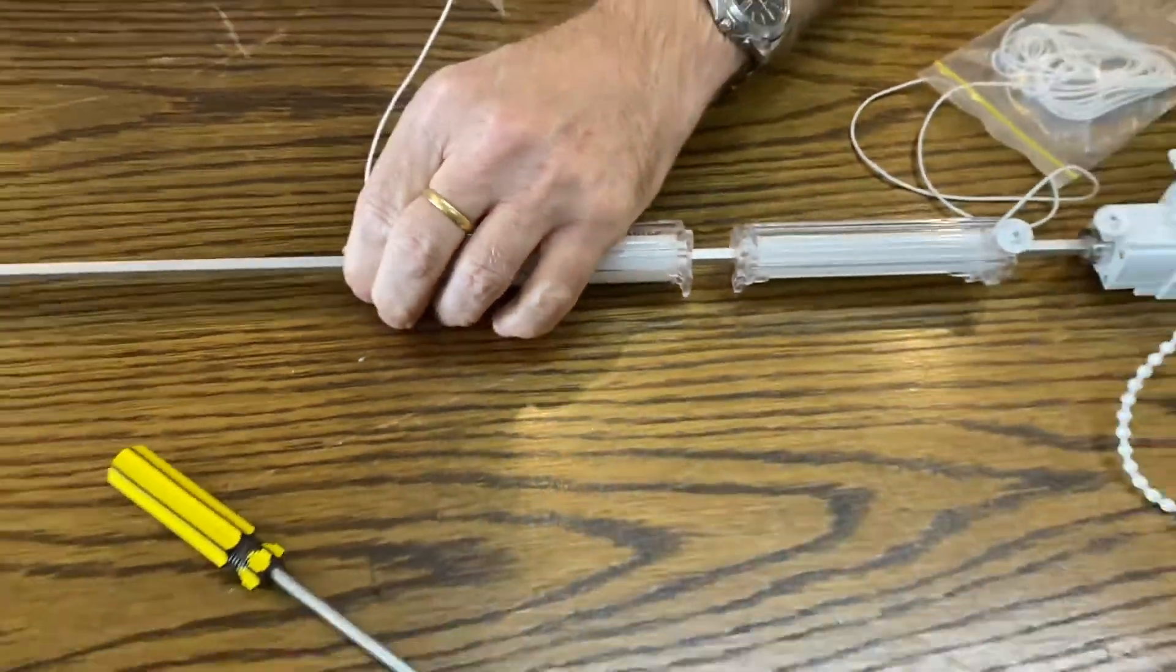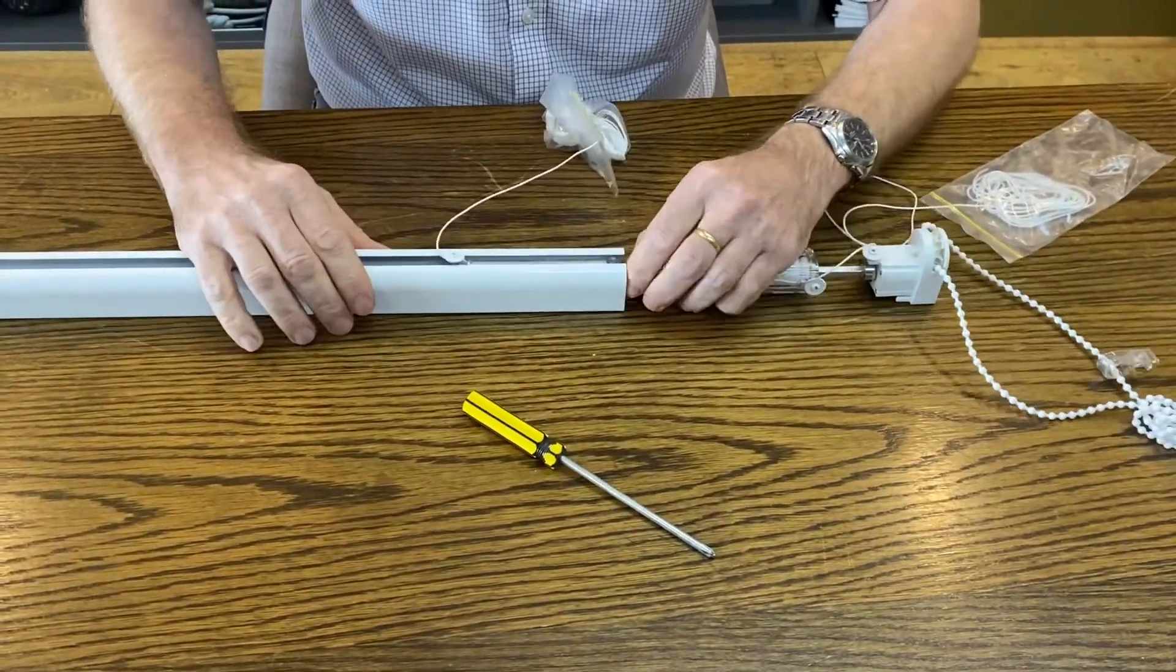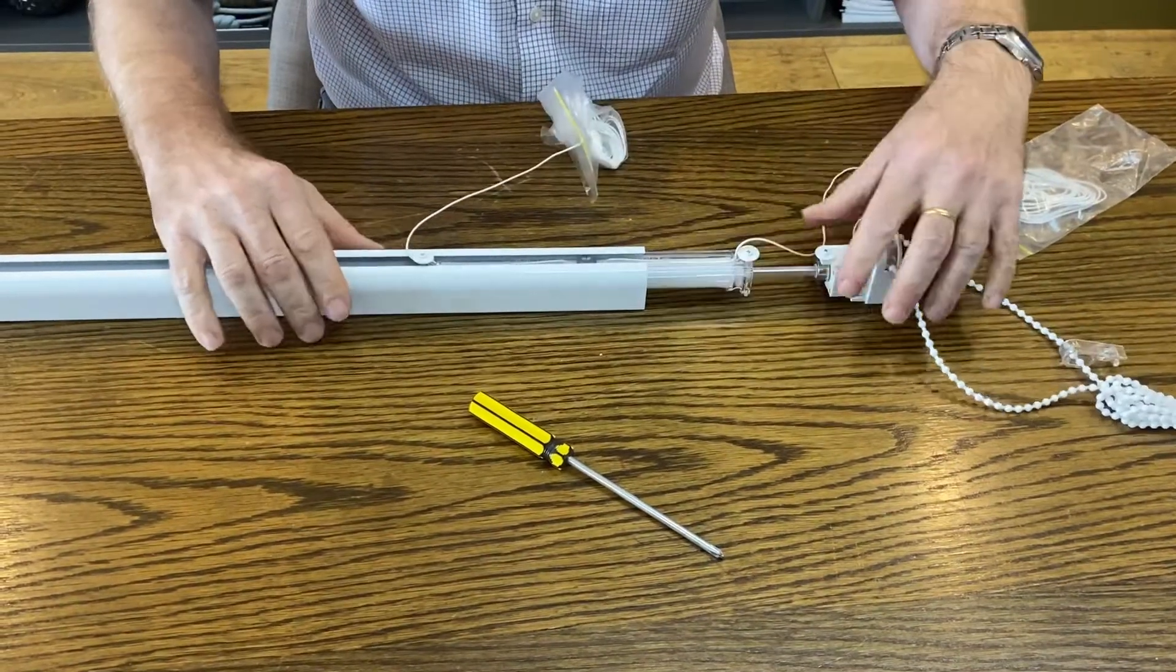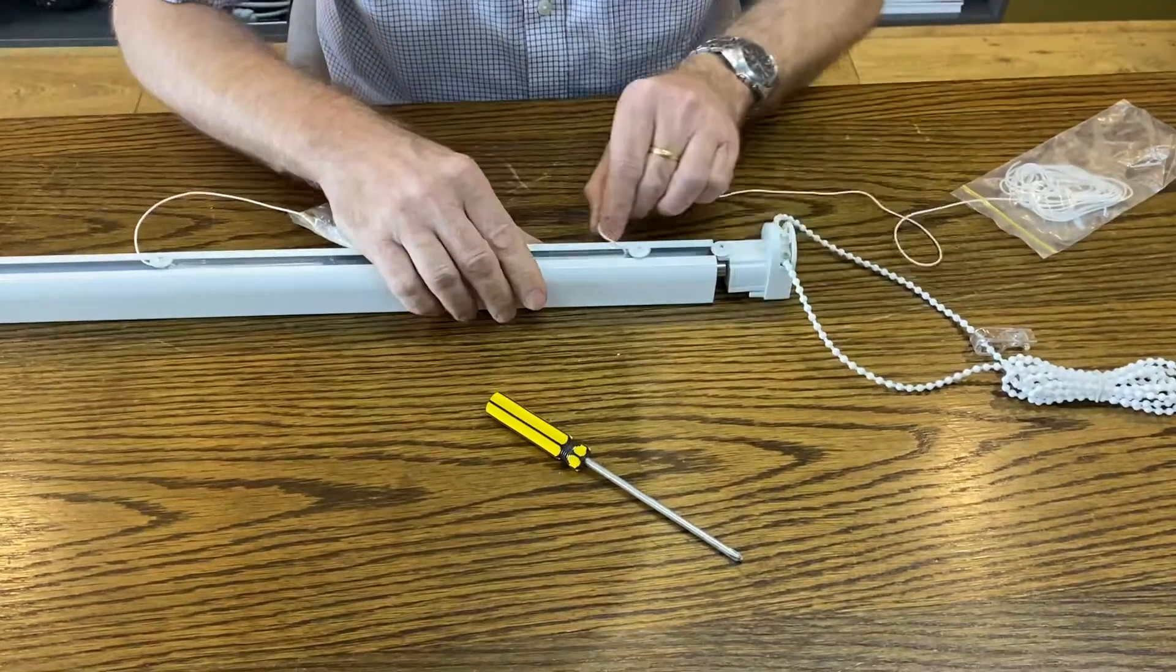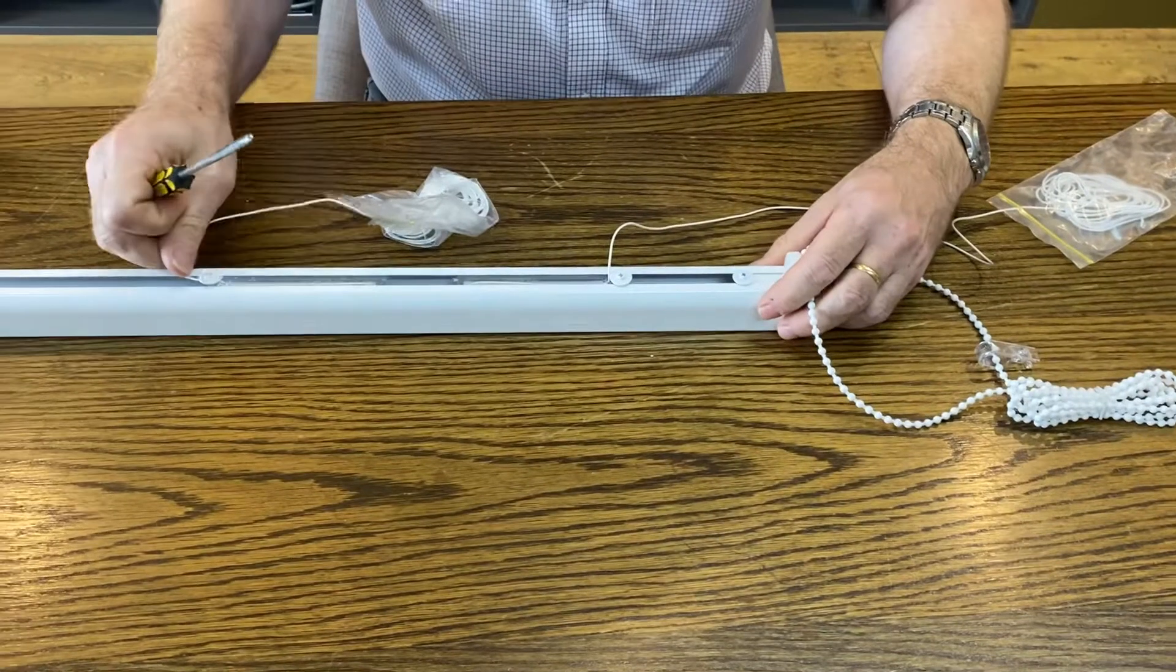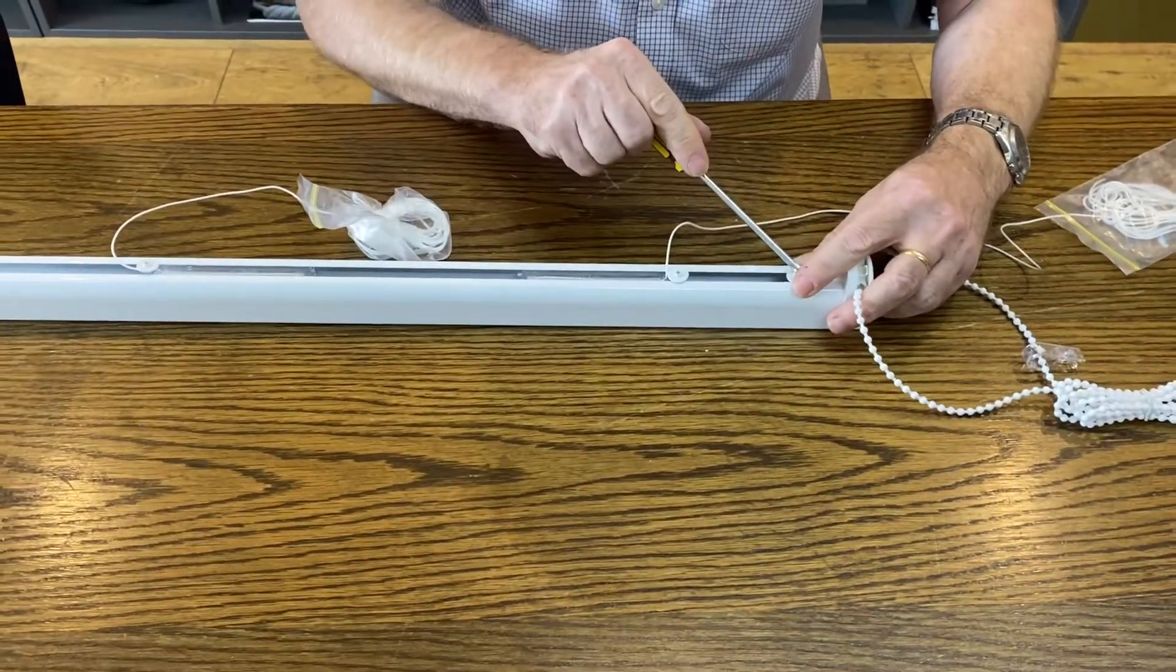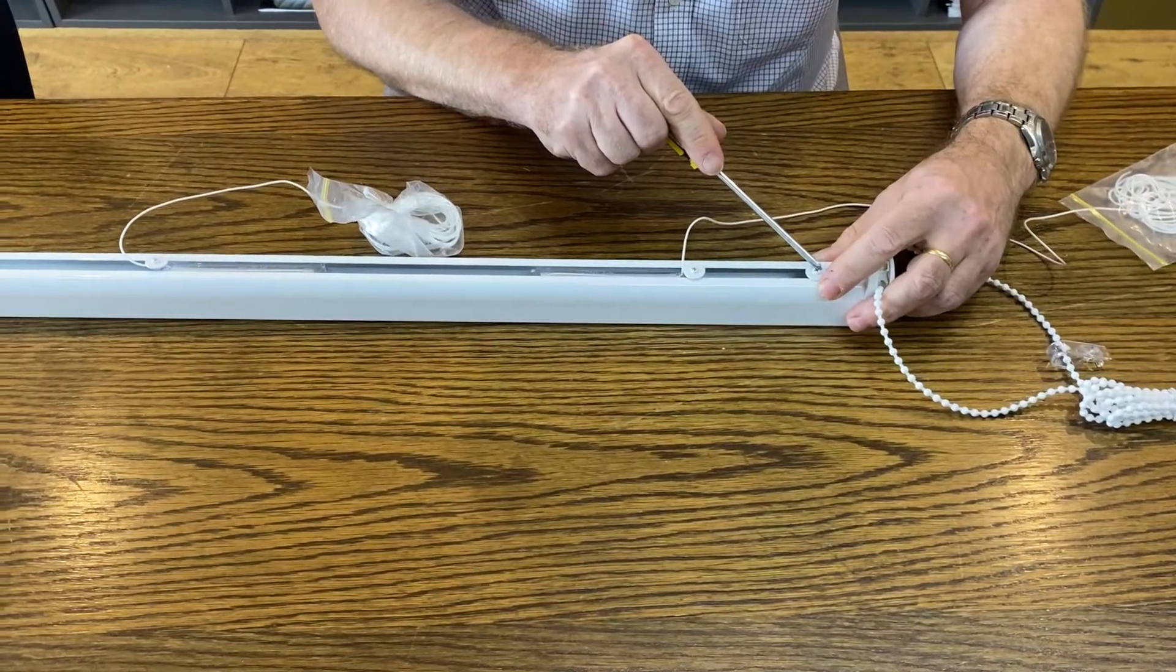And then feed the drive bar, the cord spools, into the headrail. And now tighten up the control unit securing screw.